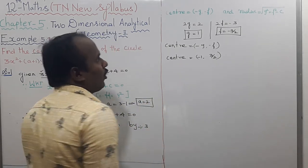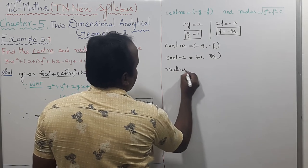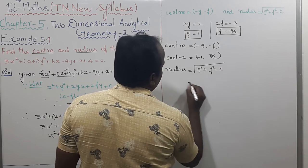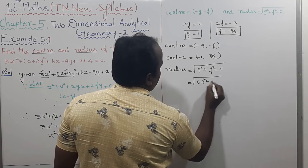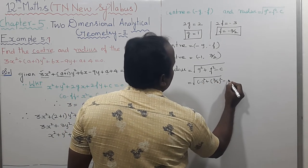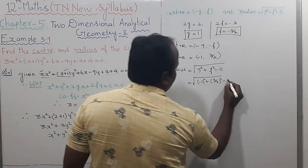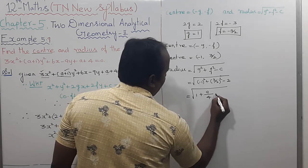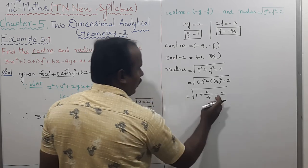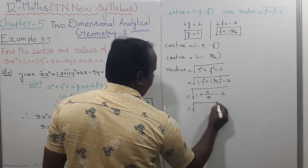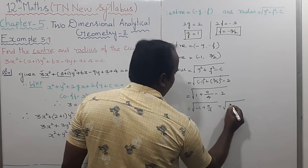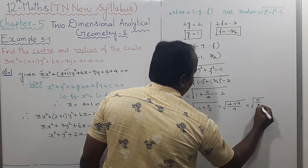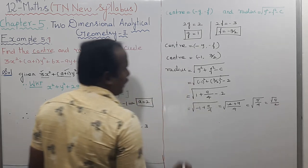Next, find the radius. Radius = √(g² + f² - c) = √((-1)² + (3/2)² - 2) = √(1 + 9/4 - 2) = √((-4 + 9)/4) = √(5/4) = √5/2. That is the radius value.